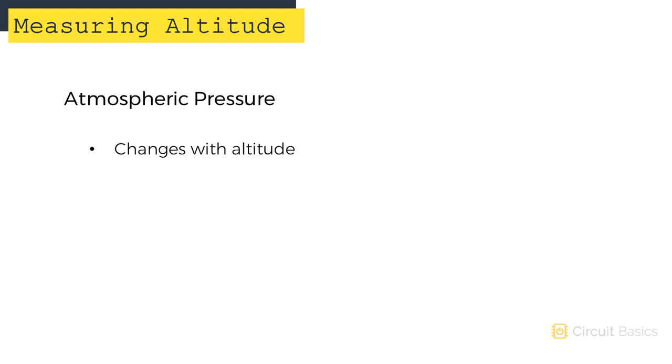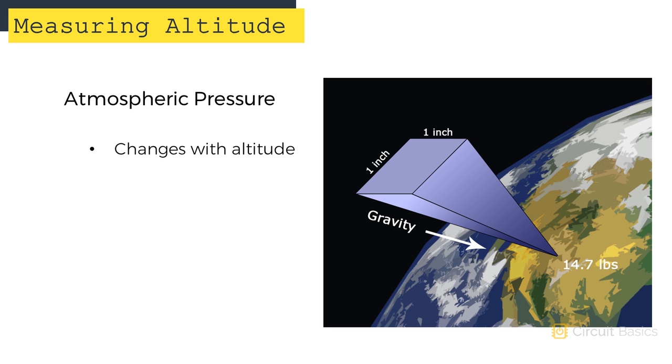Atmospheric pressure changes depending on your altitude. Think back to that column of air we talked about in the last video. This one inch by one inch column of air rises from the surface of the Earth to the very edge of the atmosphere. If you're standing on the ground beneath this column, you would feel a pressure of one atmosphere, or 14.7 pounds per square inch.